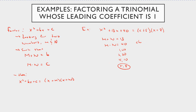And this works — if you FOIL it out: x times x gets me x squared, x times 8 gets me 8x, 5 times x gets me 5x, and 5 times 8 gets me 40. Then you combine the middle terms and you get it.